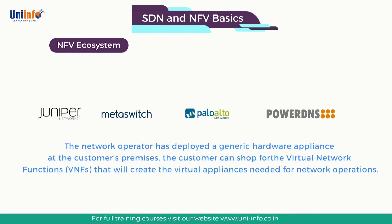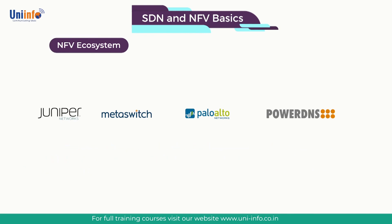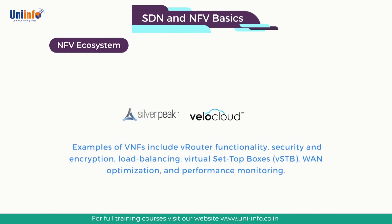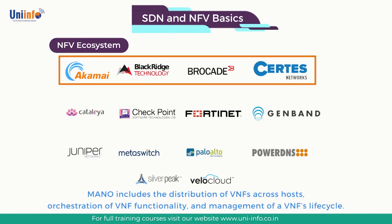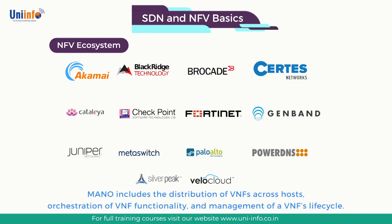Once the network operator has deployed a generic hardware appliance at the customer's premise, the customer can shop for the virtual network functions that will create the virtual appliances needed for network operations. The VNF ecosystem includes a wide variety of components from multiple vendors. Examples of VNFs include vRouter functionality, security and encryption, load balancing, virtual set-top box, WAN optimization, and performance monitoring. Once selected, the VNFs are controlled and operated through what ETSI has defined as the Management and Orchestration function. MANO includes the distribution of VNFs across hosts, orchestration of VNF functionality, and management of a VNF's lifecycle.